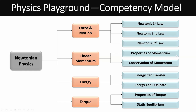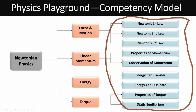Here's the competency model — the first step in any assessment. Rather than just saying 'I'm measuring physics or creativity,' you have to specify exactly what you're measuring. We measure force and motion, linear momentum, energy, and torque. Each breaks down into several topics: Newton's first, second, and third laws for force and motion; properties and conservation of momentum; energy transfer and dissipation; properties of torque; and static equilibrium. These were our nine focal topics, and we developed more than 10 game levels per topic targeting those specific areas.